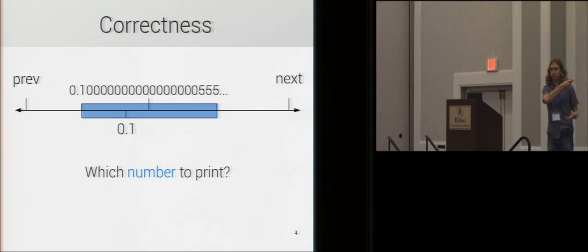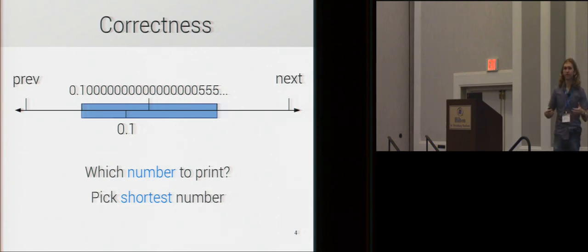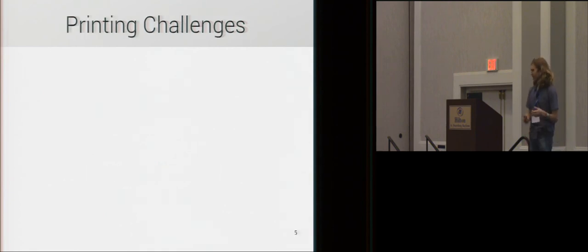So, instead, in this range, there is a number, 0.1. You know, if the user entered 0.1, we'd probably want to return to them that the number is 0.1. And so, the definition we have for correctness here is that we want to pick the shortest number in this range.